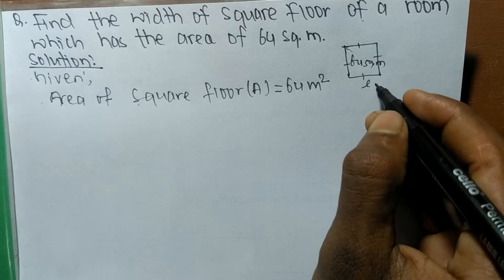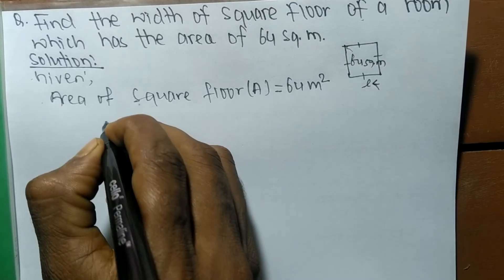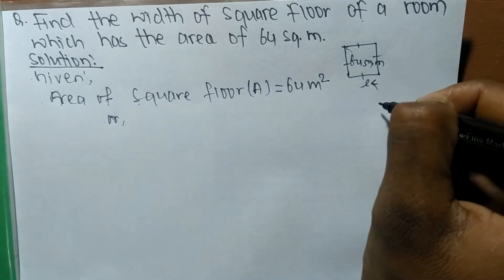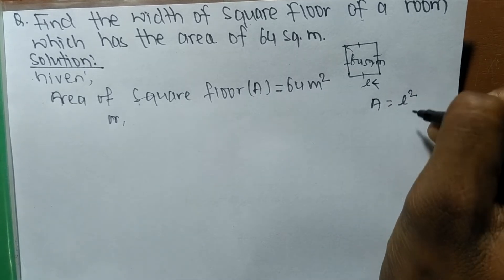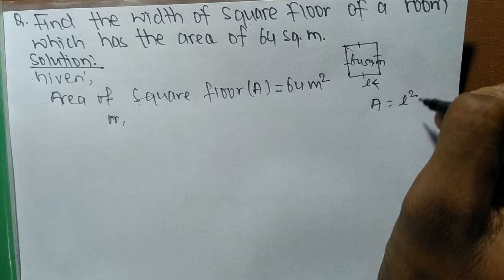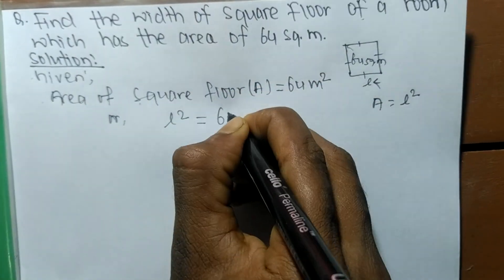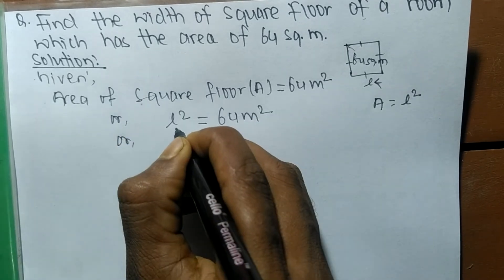When there is a square floor, then area is equal to L square, means length of side squared. So we write L² = 64 meter square, where L is the width of each side of a square.